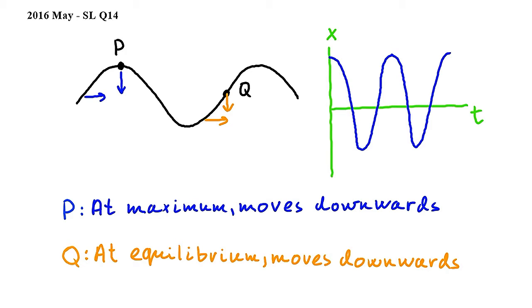I sum this up below. Based on this now we can draw the graph for Q. It starts from its equilibrium point, so from the t-axis, and moves downwards. So we can conclude that the answer to this question is C.